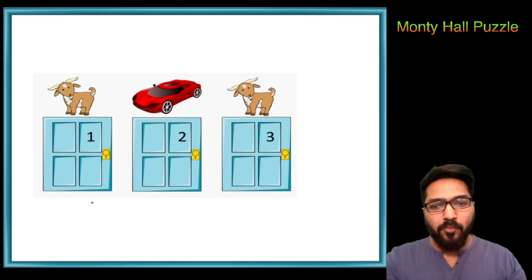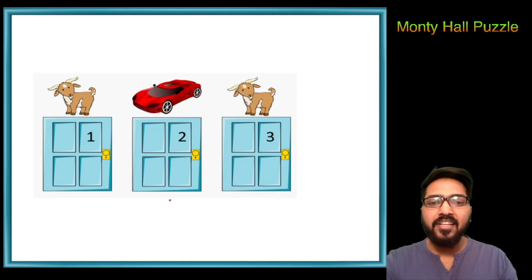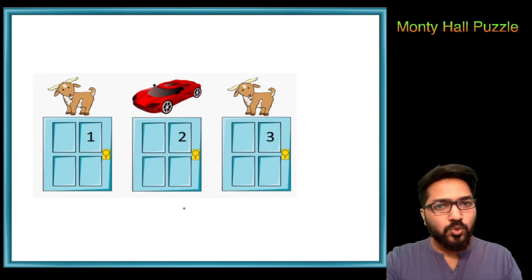According to this problem, there is a game show in which the contestant is shown three doors and is told that there is a car behind one of them and there are goats behind the other two. The contestant is supposed to choose one door. If he chooses the door which has the car behind it, he wins the car, otherwise he wins nothing.